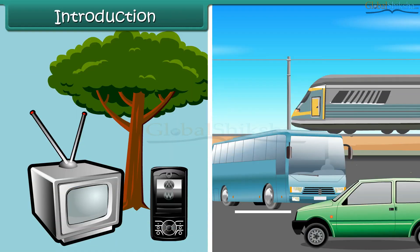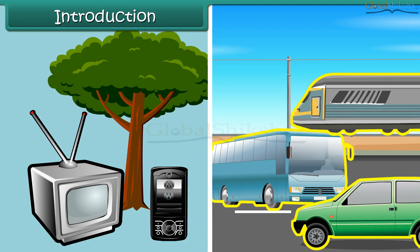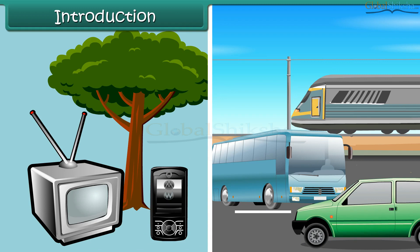Look around yourself and you will find objects of different kinds such as television, mobile, trees, cars, buses, trains, etc. Objects such as television, mobile, trees, etc. are static. In other words, their position does not change with time.